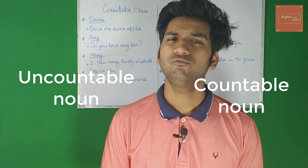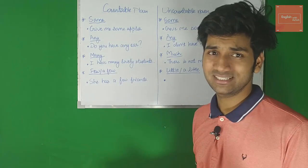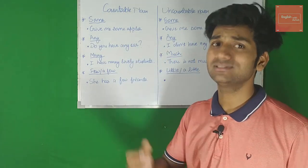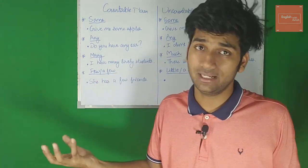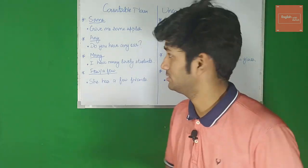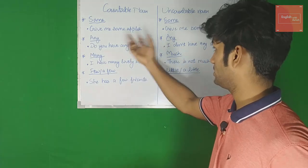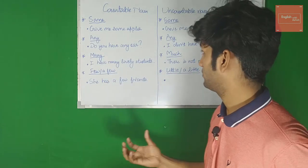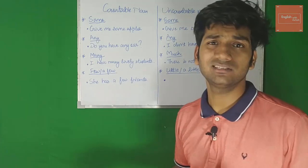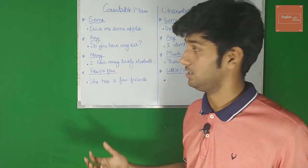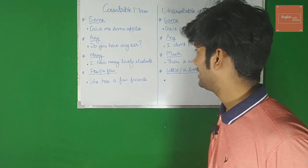When we want to quantify nouns — both countable and uncountable — we use certain words. 'Some' is a common word used with both countable and uncountable nouns. It means a positive number — you don't know exactly what the number is, but it's positive. 'Give me some apples' — apple is countable. 'Give me some water' or 'give me some pieces of advice' — these are uncountable. So 'some' works with both.